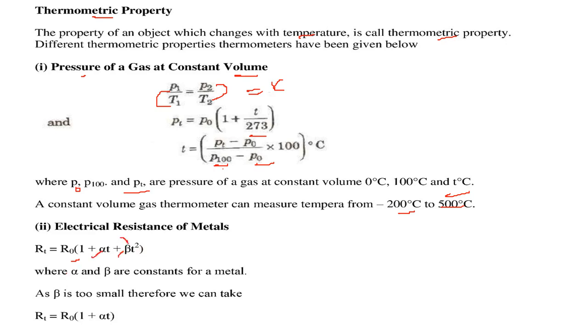This beta is very small, too small. So we can take this RT equal to R0, 1 plus alpha T, if this is very small, so this can be taken as 0.